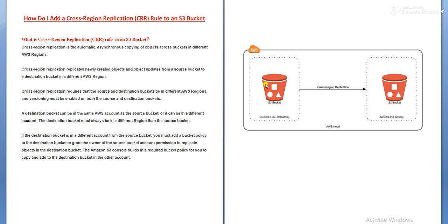A destination bucket can be in the same AWS account as the source bucket, or it can be in a different account. If the destination bucket is in a different account, you must add a bucket policy — that means we need to create an IAM role for that. That's the overview of CRR, and now we'll go to the lab session.